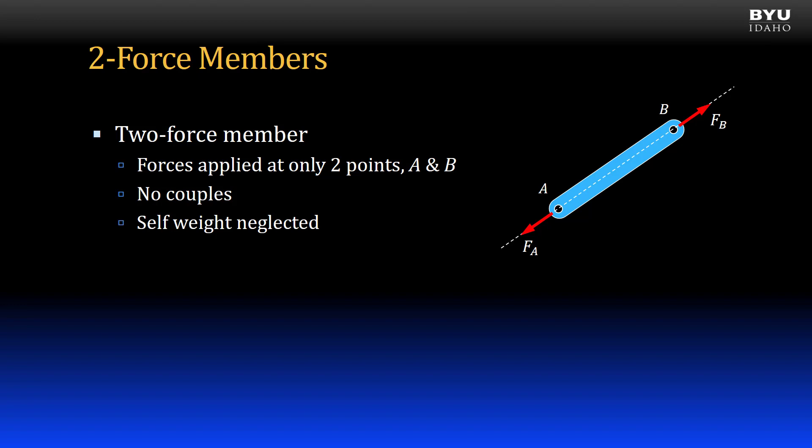A two-force member is a member that has forces applied at only two points, such as point A and B of the link shown. There may be no couples, or in other words, no moments applied to the member. Also, unless the member is a vertical member, the self-weight of the member is neglected. This is often fine to do when the applied force is much larger than the member weight. If these three conditions are met, then the member is a two-force member.